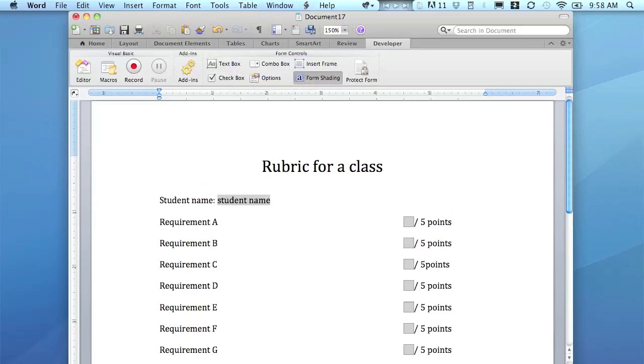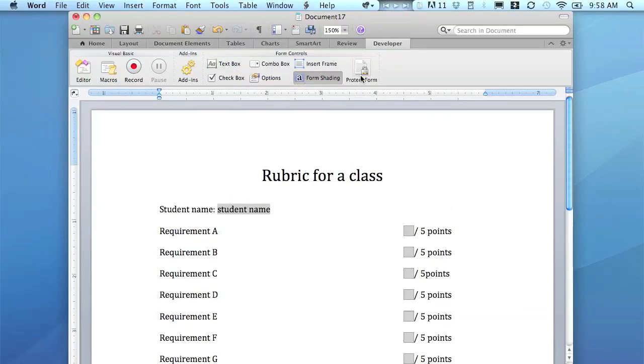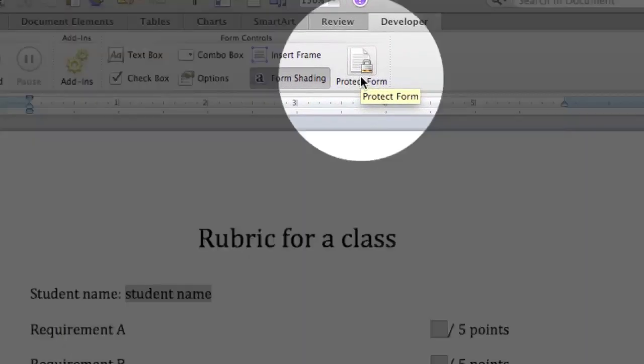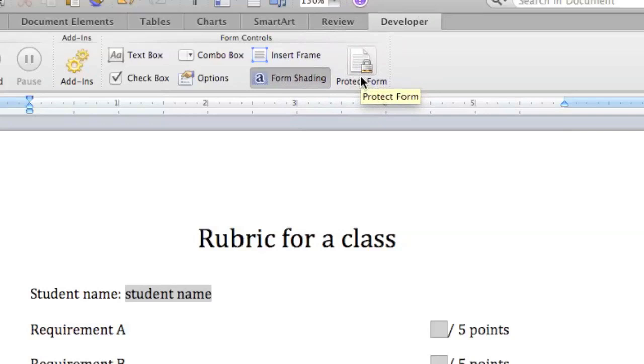So what you're going to do is at the top, you're going to see Protect Form, and we're going to click that. Boom. Once we do that, those dropdown menus will be active.